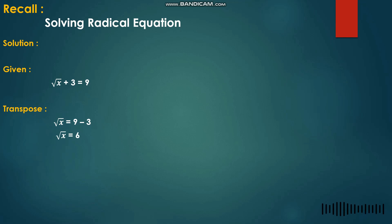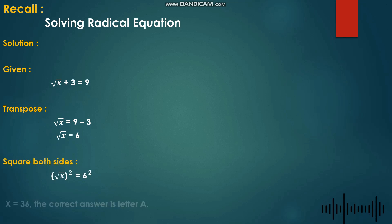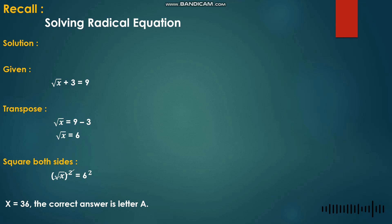To cancel out the radical symbol, we square both sides. Squaring both sides cancels the radical, leaving us with x equals 36. Therefore, the correct answer is letter A.